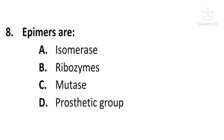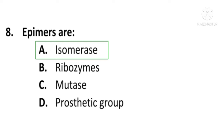Next question: Epimerase is — A) Isomerase, B) Ribozyme, C) Mutase, or D) Prosthetic group. The answer is A, Isomerase. Epimerase is an isomerase; A is the correct option.